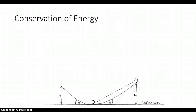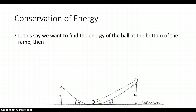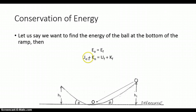Still looking at a conservative system: if we roll the ball from up here and analyze the problem with the ball's final position at the bottom of the ramp, then the total energy at the top should equal the energy at the bottom. So E sub zero equals E sub F, which gives us U sub zero plus K sub zero is equal to U sub F plus K sub F.